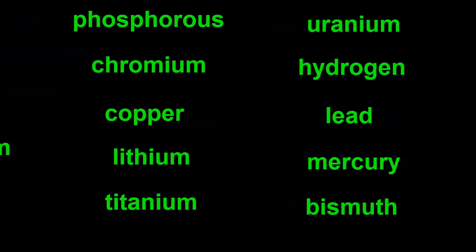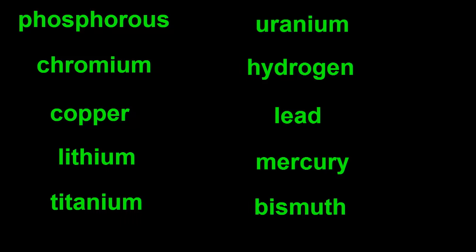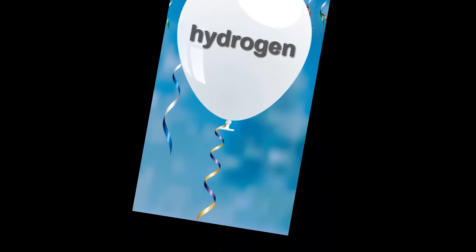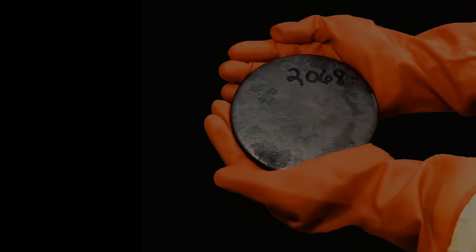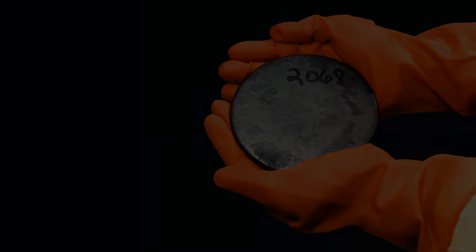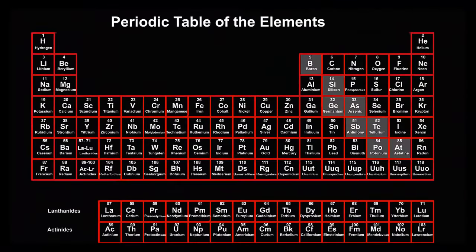Fortunately, there's a list showing all the elements. It starts with the element with the lightest atoms, hydrogen, and goes to the element with the heaviest atoms, uranium. This list is called the periodic table. How about grabbing your own copy now and check it as you watch the video.